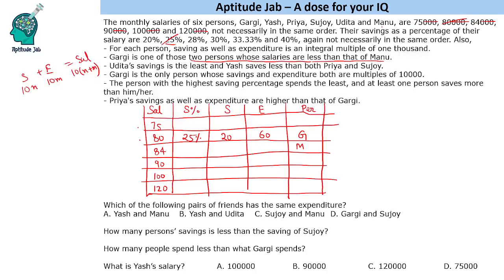For the salary of 84,000, we test which percentages give multiples of 1,000. 20% gives 16,800 (no), 28% gives 23,520 (no), 30% gives 25,200 (no) — the only valid option is 33.33%, giving savings of 28,000 and expenditure of 56,000. So the person earning 84,000 saves at 33.33%.